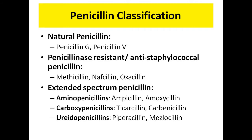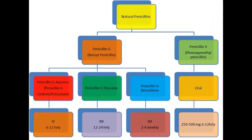In this video we'll be talking about the differences and similarities between penicillin G and penicillin V. Both are natural penicillins — they are called natural because they were initially derived from a fungus. Penicillin G is also called benzylpenicillin, and penicillin V is called phenoxymethyl penicillin.